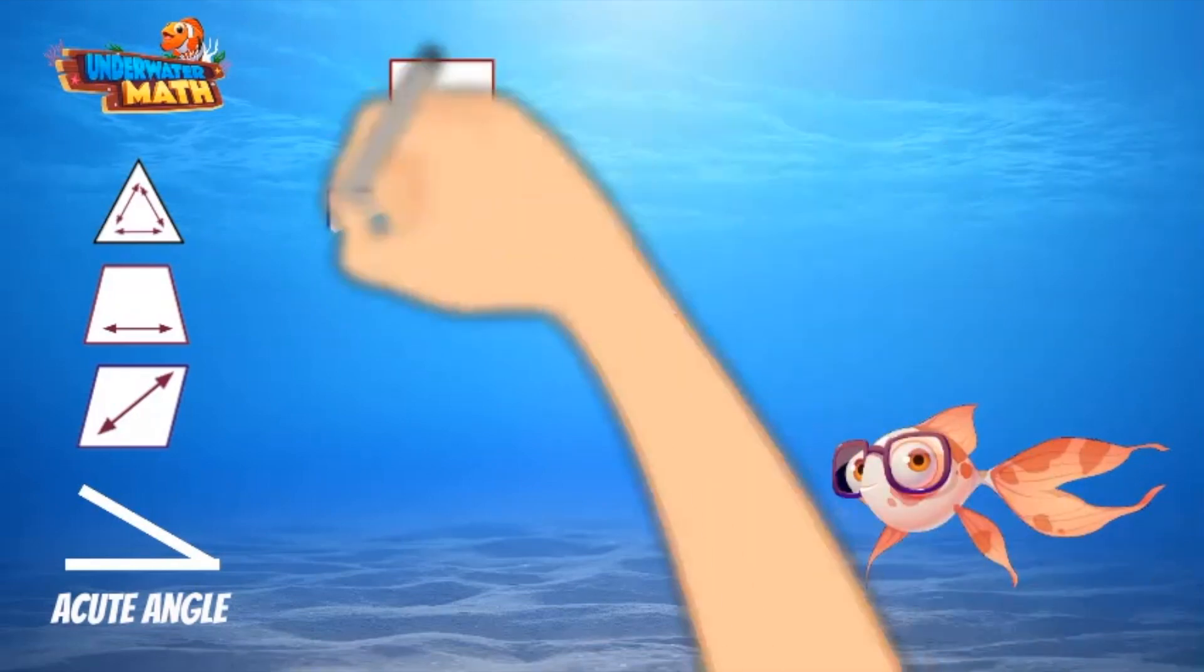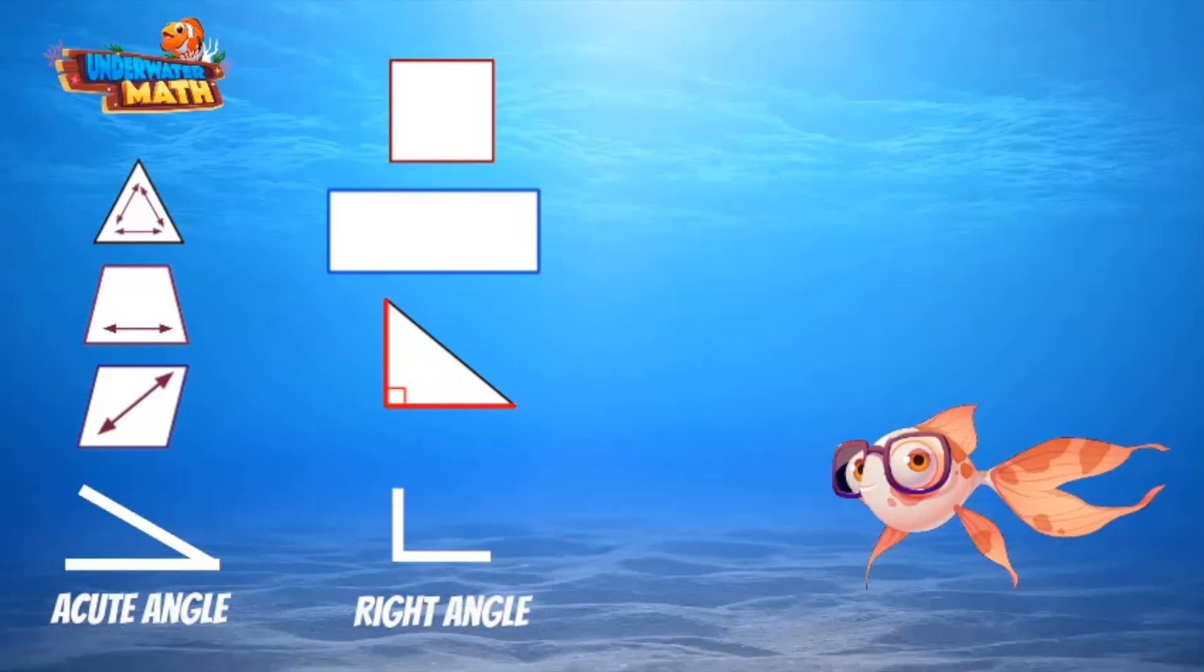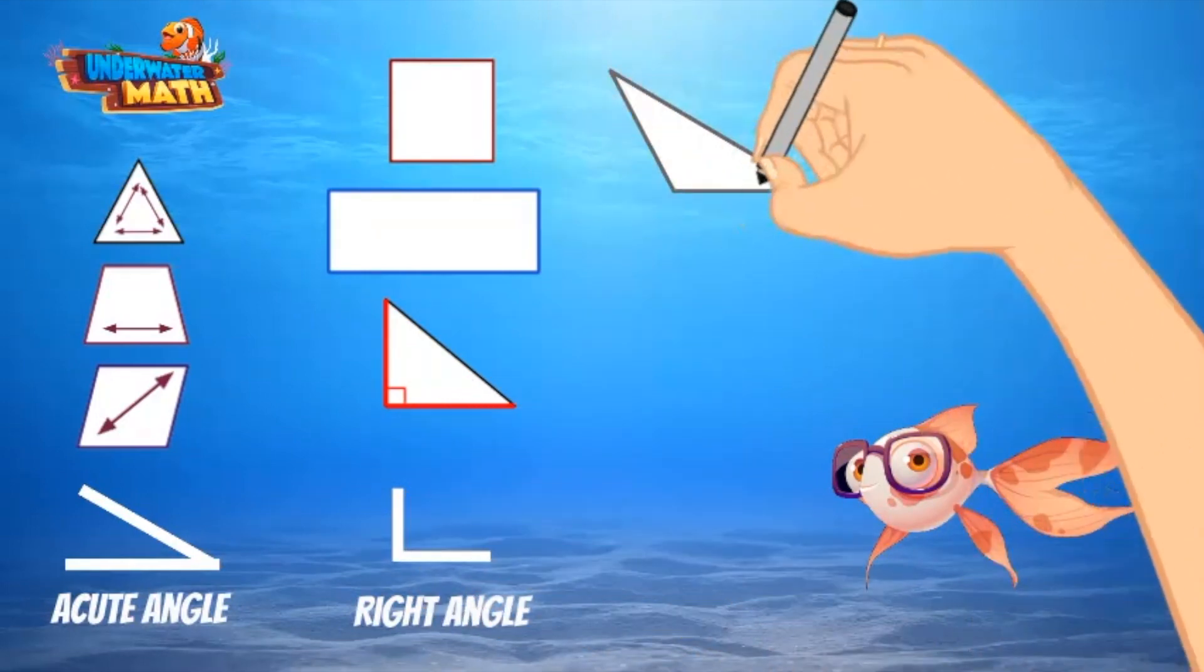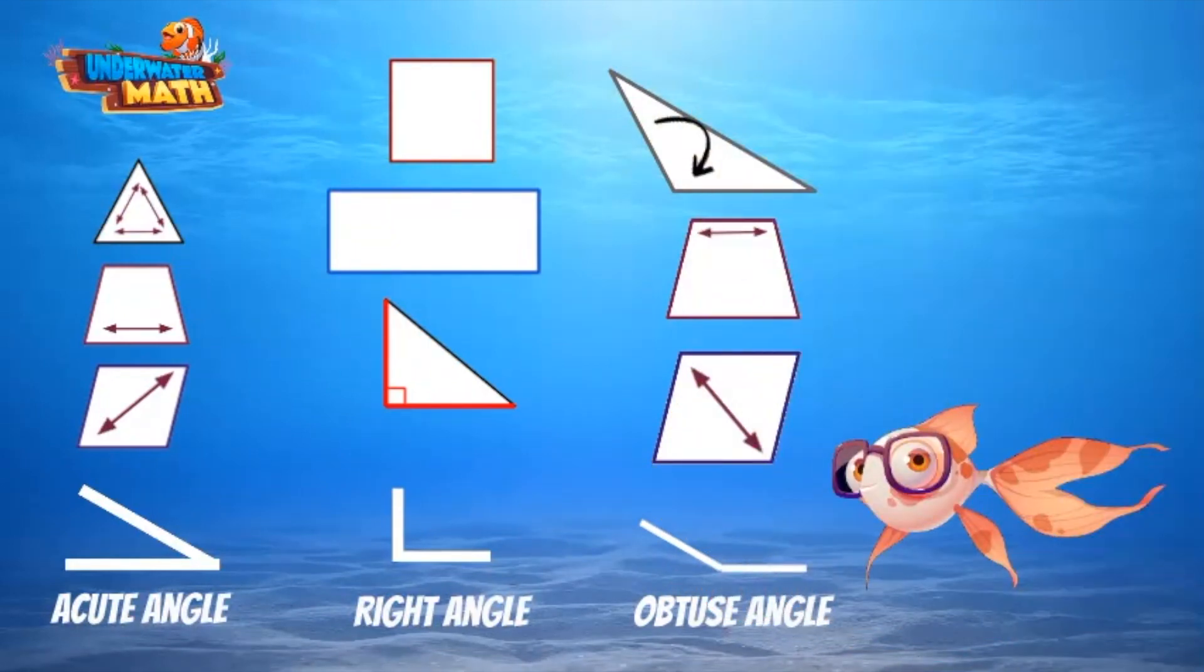Shapes like squares, rectangles, and right triangles have a right angle. A right angle is exactly 90 degrees. Obtuse triangles have an obtuse angle as do trapezoids and a rhombus. Obtuse angles are greater than 90 degrees.